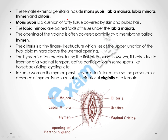Now we are going to discuss the female external genitalia, which includes the mons pubis, labia majora, labia minora, hymen, and clitoris. The mons pubis is the upper area — it is a cushion of fatty tissue covered with skin and hairs, which are called pubic hairs. Below that is a folding of the skin called the labia majora, and beneath that is another folding of the skin called the labia minora.